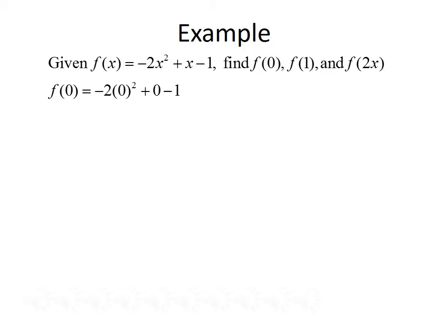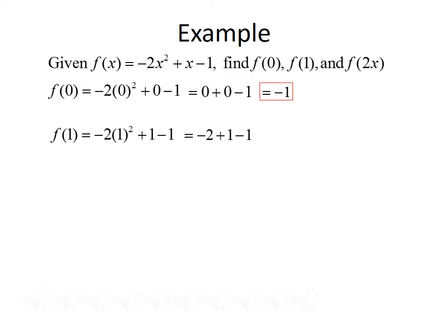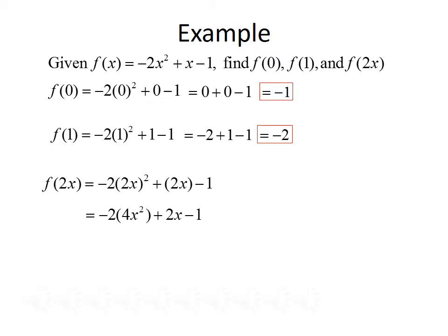We'll start with f(0). To find f(0), we plug 0 in for x: f(0) equals negative 2 times 0 squared plus 0 minus 1, which simplifies to 0 plus 0 minus 1, so f(0) equals negative 1. For f(1), we plug 1 in for x: negative 2 times 1 squared plus 1 minus 1, which simplifies to negative 2 plus 1 minus 1, so f(1) equals negative 2. Finally, to evaluate f(2x), we plug 2x in everywhere we see x: f(2x) equals negative 2 times (2x) squared plus 2x minus 1. Squaring gives negative 2 times 4x squared plus 2x minus 1, which simplifies to negative 8x squared plus 2x minus 1.